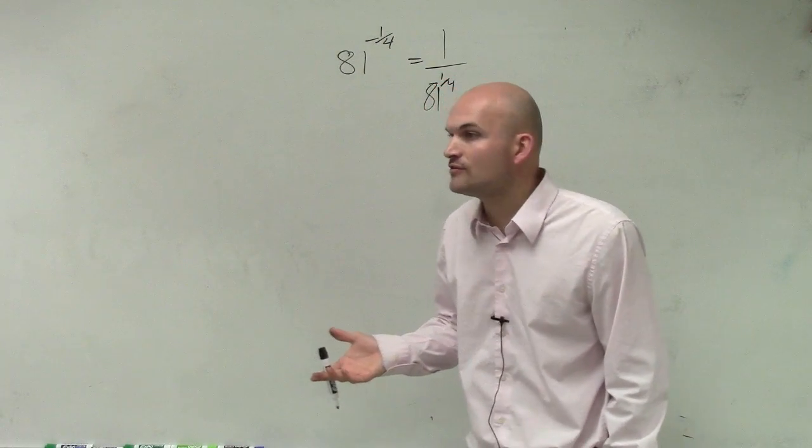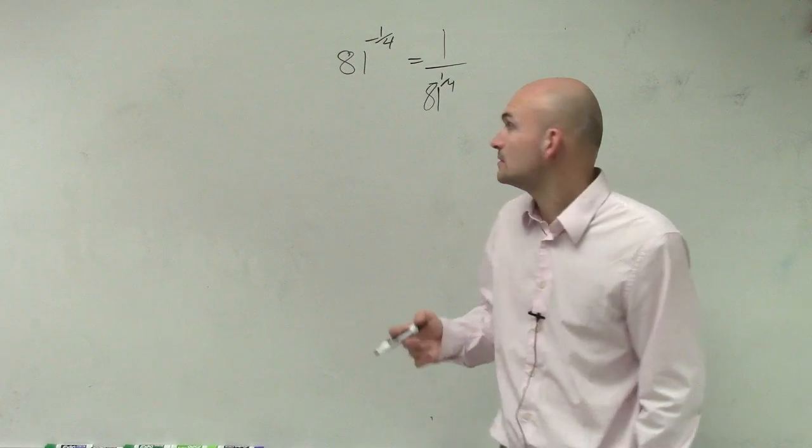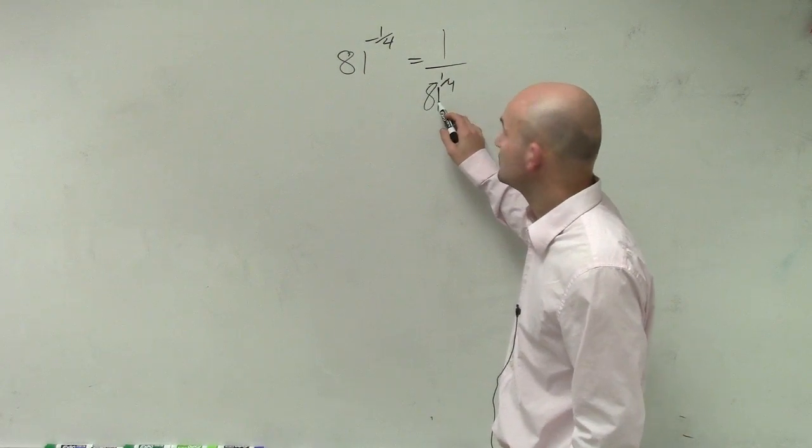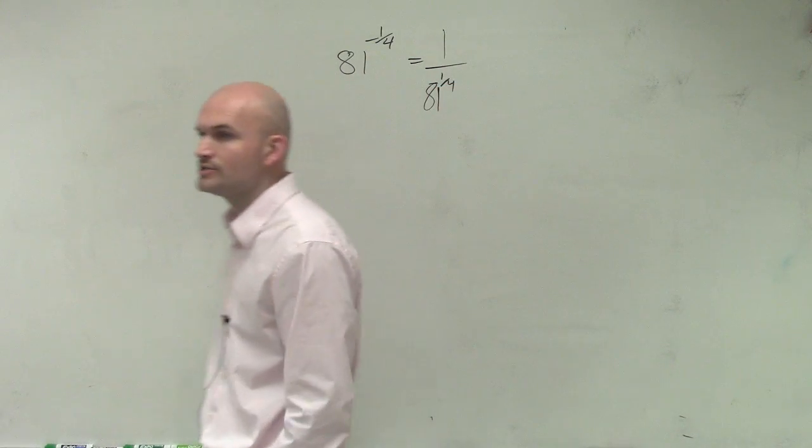Could we do 3 cubed, 3 to the fourth? It is 81, not 84. Can we write 81 as a different power?